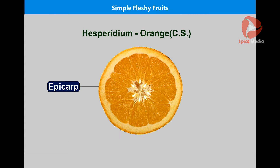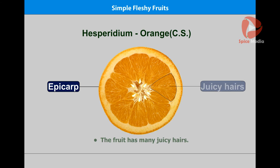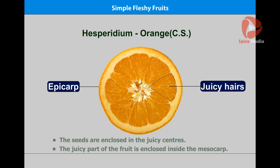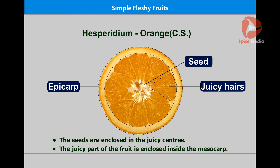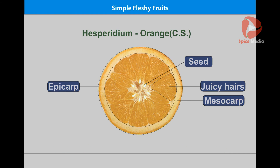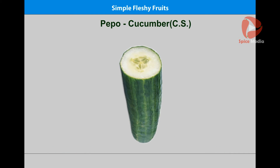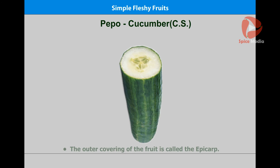In the orange, the fruit is enclosed in juicy segments. The juicy part of the fruit is enclosed inside the mesocarp. Let us look at the cucumber. Cucumber is also a fleshy fruit, and the outer covering of the fruit is called the epicarp.